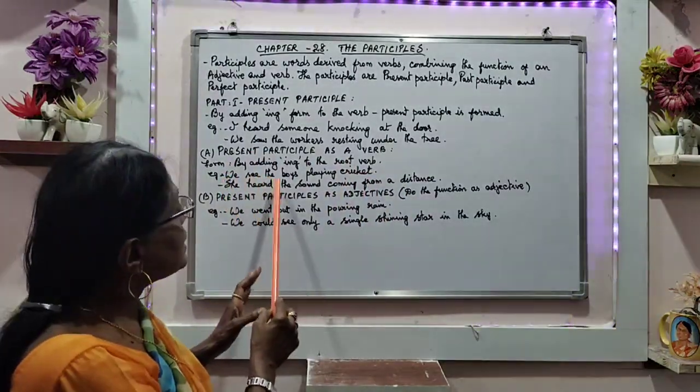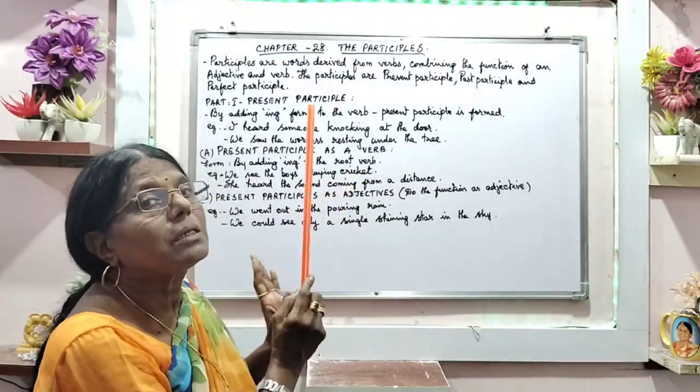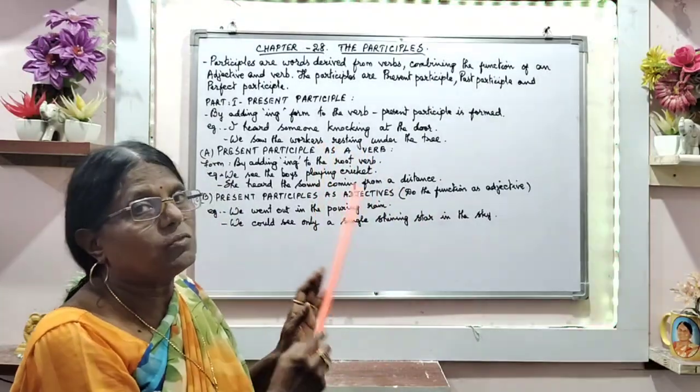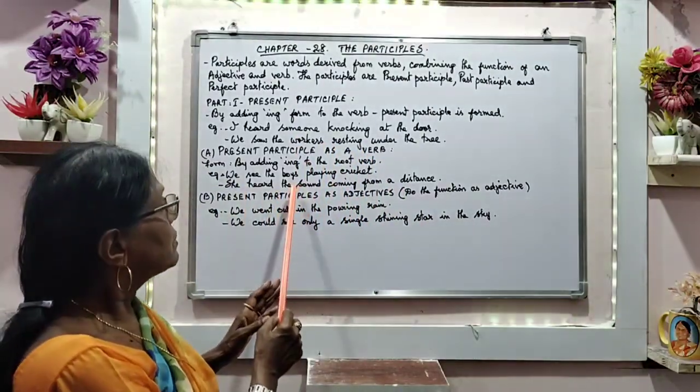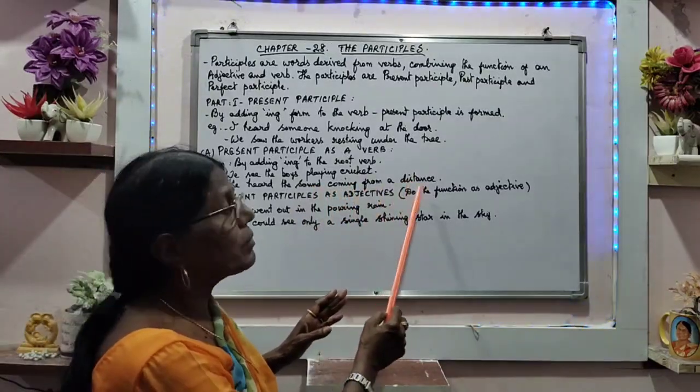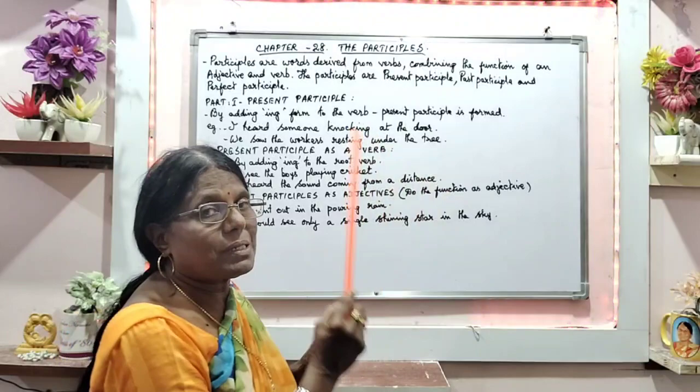We see the boys playing cricket. Playing cricket. Playing is the participle verb, present participle verb. She heard the sound coming from a distance. Coming is the present participle.